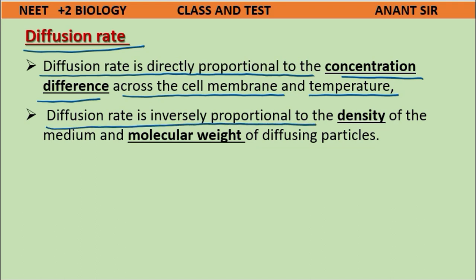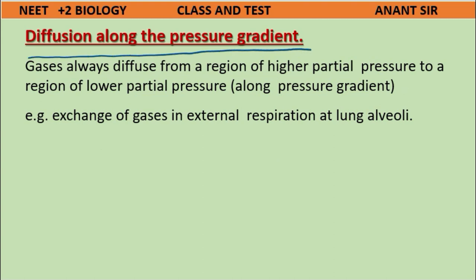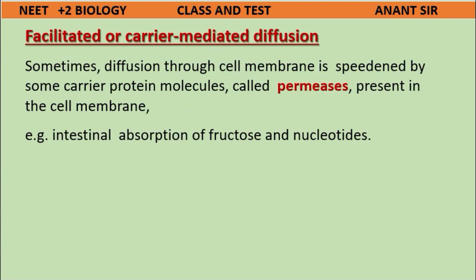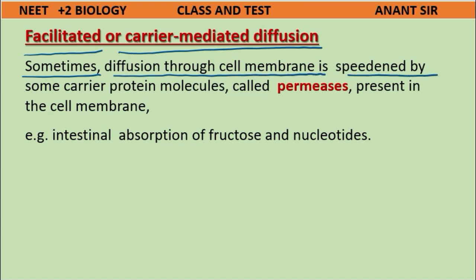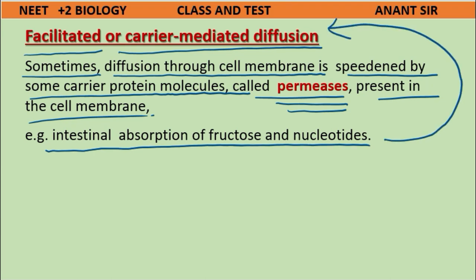Diffusion rate is inversely proportional to the density of the medium and the molecular weight of diffusing particles. Gases diffuse from a region of higher partial pressure to a region of lower partial pressure — as in the exchange of gases during external respiration at lung alveoli. Facilitated or carrier-mediated diffusion occurs when diffusion through the cell membrane is expedited by carrier protein molecules called permeases. Intestinal absorption of fructose and nucleotides are examples of facilitated diffusion.